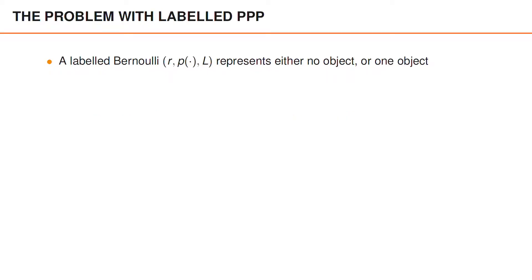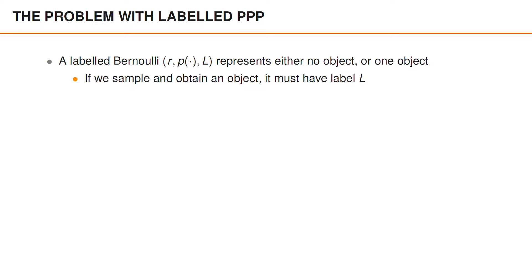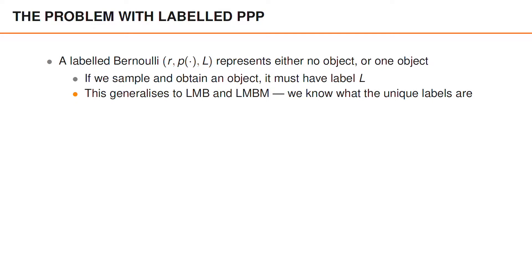A labeled Bernoulli with parameters R, P, and L represents either no object or one object. And if we sample a labeled Bernoulli RFS and obtain an object, then it must have label L. And this generalizes to LMB and LMBM. If we sample, we know precisely which sampled object has which unique label.